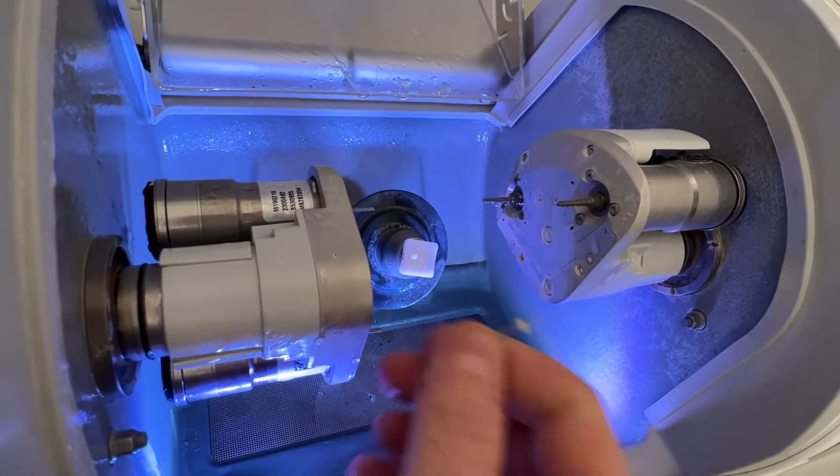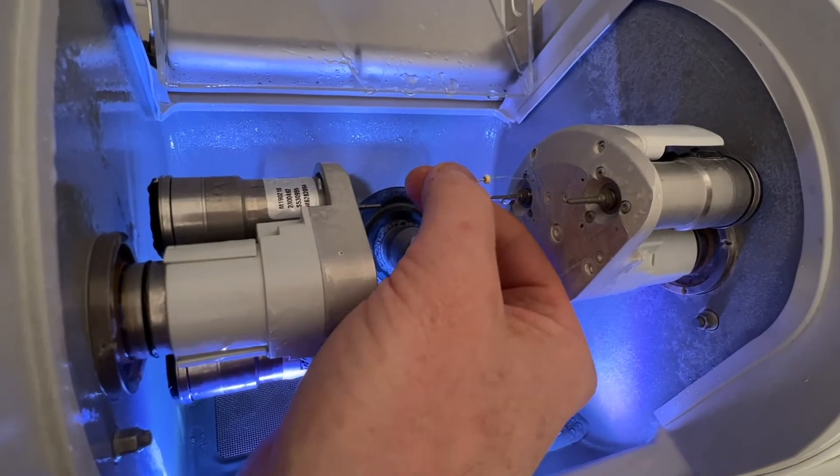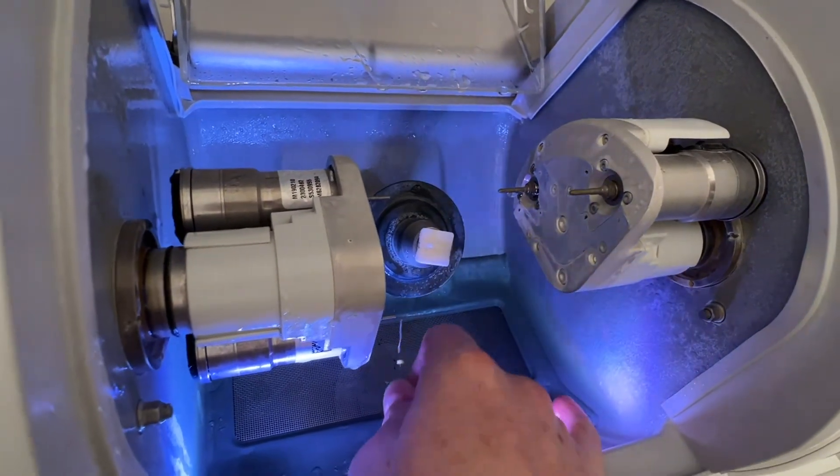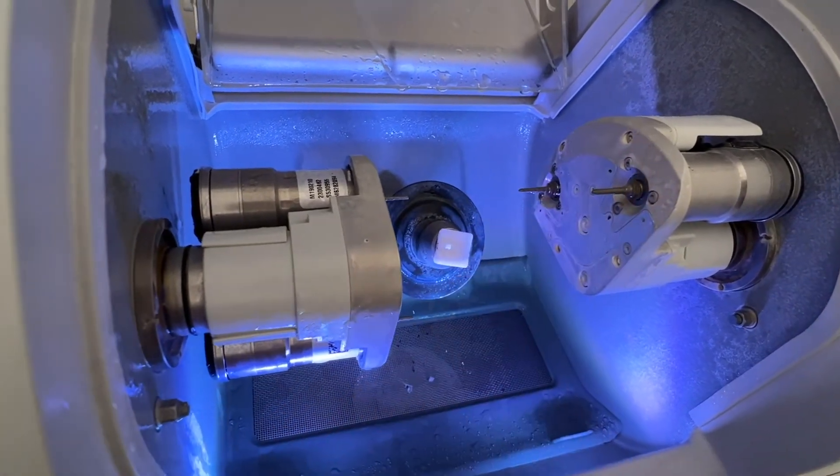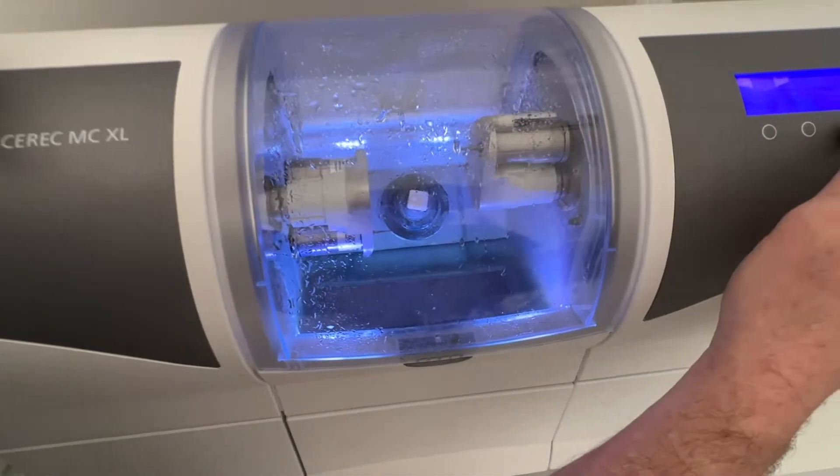Zirconia produces all sorts of gunk everywhere, not just in here but down there below where the drain is. So we need to make sure that these jets stay really nice and clear to be able to mill properly.